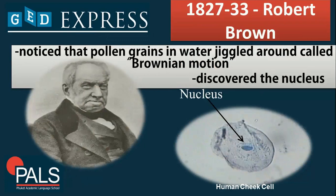On 1827 to 1833, Robert Brown was able to notice that pollen grains and water jiggled around, and he coined that as Brownian motion. Because of this specific phenomenon, he was able to discover the nucleus of a cell. You can see on the photo an example of a human-shaped cell where the nucleus is very evident.